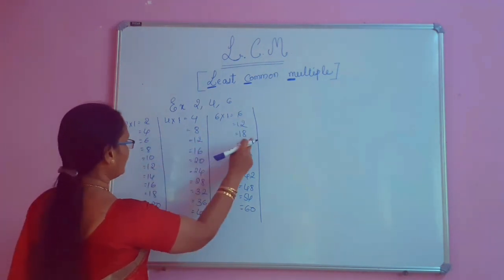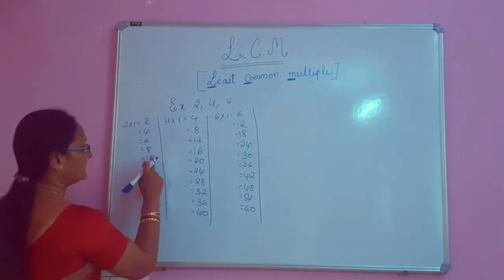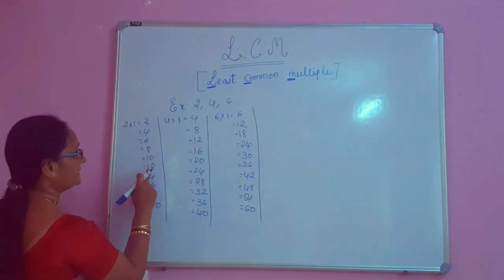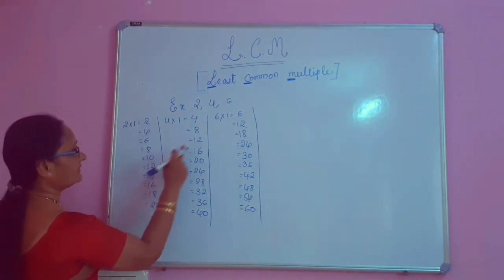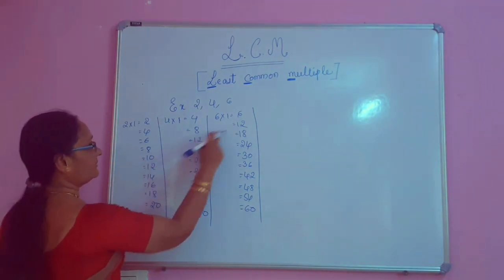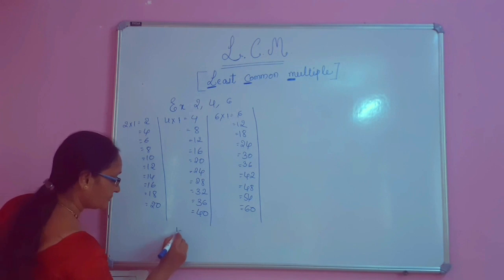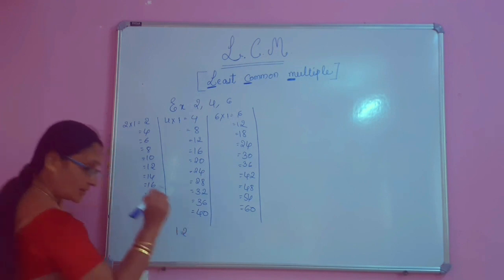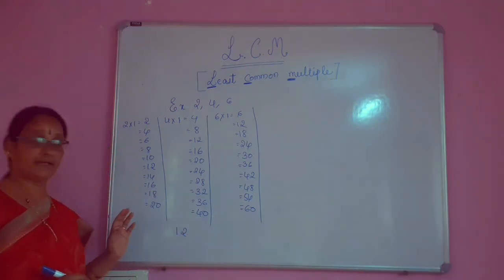Then 8, 16, 24. Then 10. Here see — here also 12, here also 12, here also 12. Yes, 12 is the common multiple.